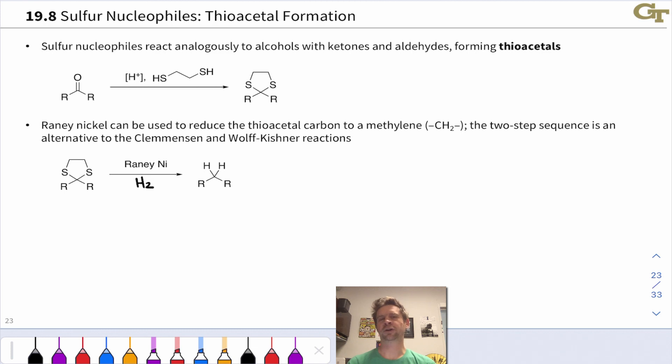Sulfur nucleophiles are highly analogous to oxygen nucleophiles and form products in reactions with ketones and aldehydes called thioacetals, which are just like acetals but have two sulfurs linked to the carbonyl carbon rather than two oxygens. A molecule of water is liberated in this reaction as it involves the addition of two equivalents of a thiol or two thiol groups to the carbonyl carbon with loss of water. There's our thioacetal functional group, highlighted in purple.